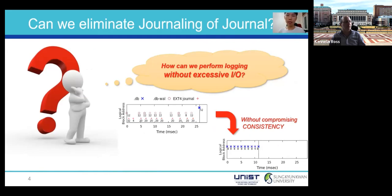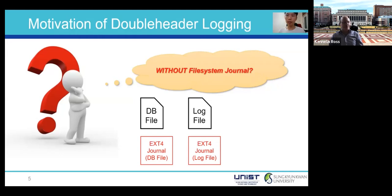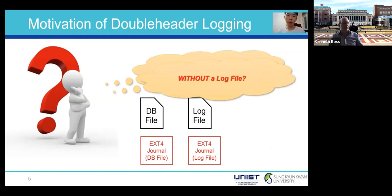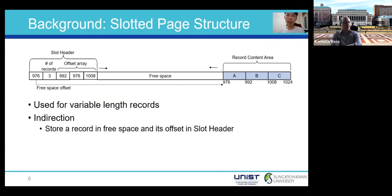How can we avoid this journaling-of-journal problem without excessive I/O? Removing file system journaling may cause file system corruption. The root cause is the additional journal file in SQLite. Using double header logging (DHL), we can perform in-place logging without an additional log file. Various database systems including SQLite employ a slotted page structure consisting of slot header, free space, and record content area. DHL makes use of this free space as a logging area.